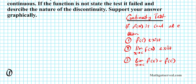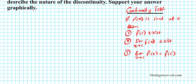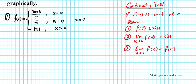For example 1, we have the piecewise defined function: f(x) = sin(x)/x when x < 0; f(x) = 5 when x = 0; and f(x) = |x| when x > 0. We are going to look at a = 0 and ask: is this function continuous at a = 0?